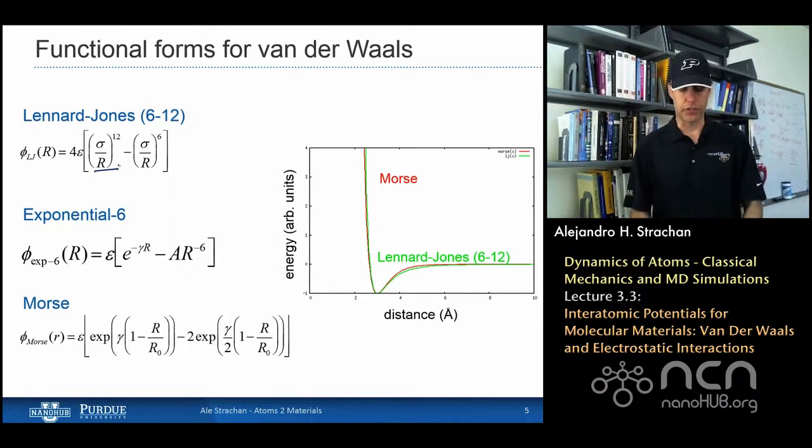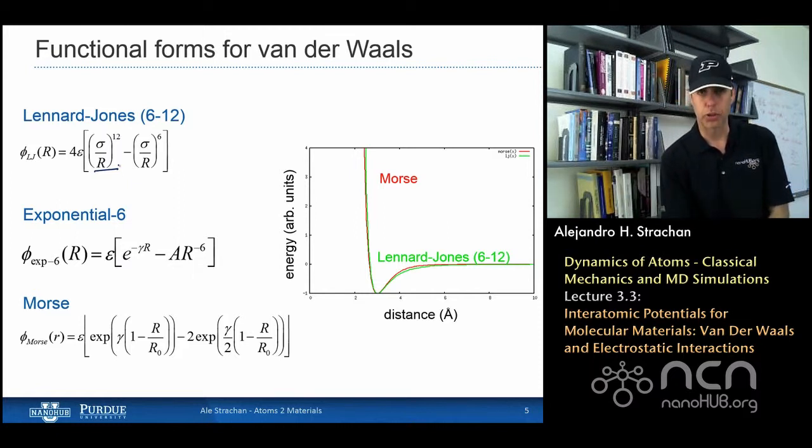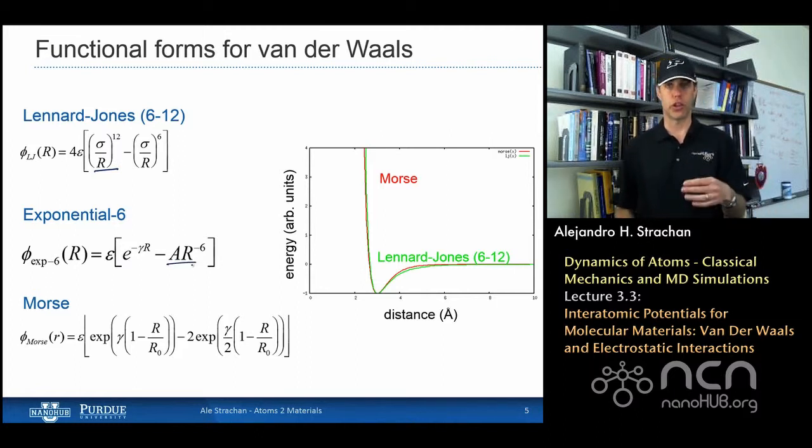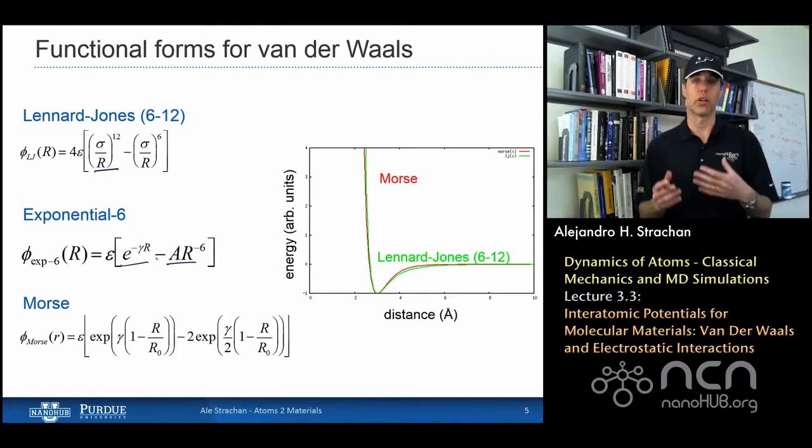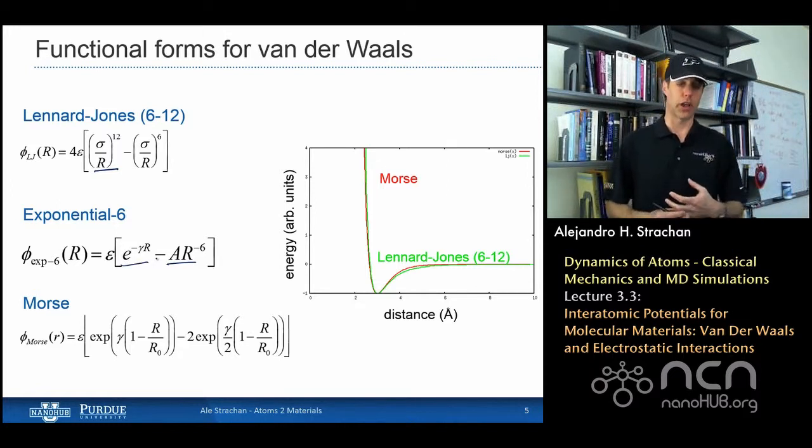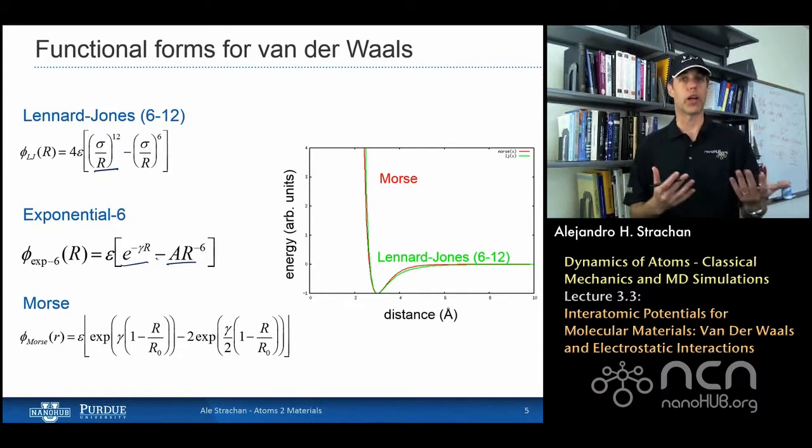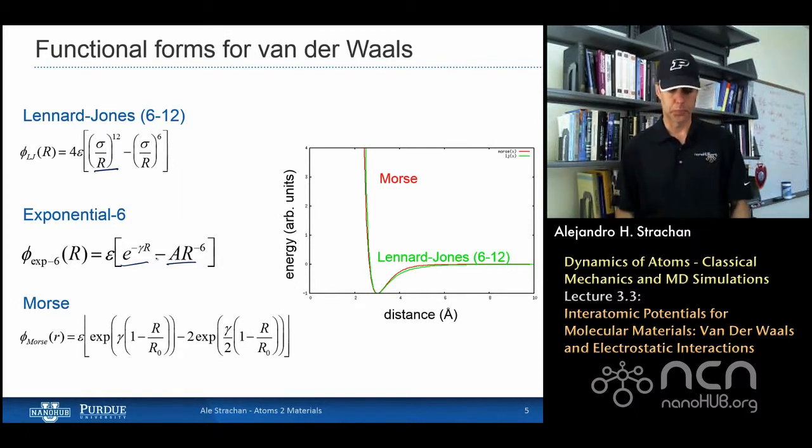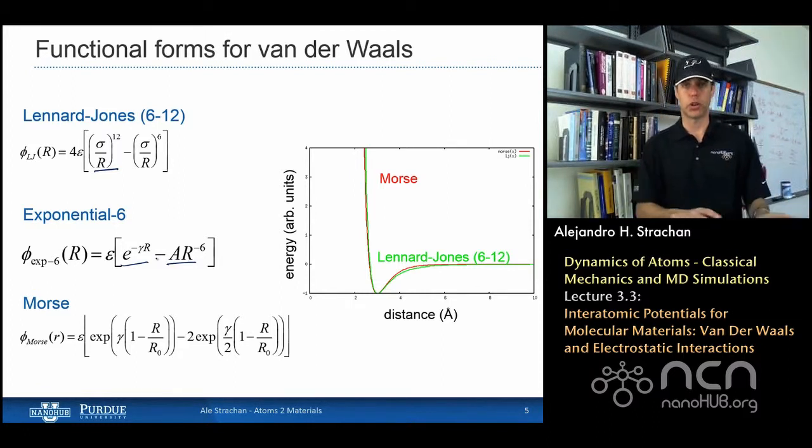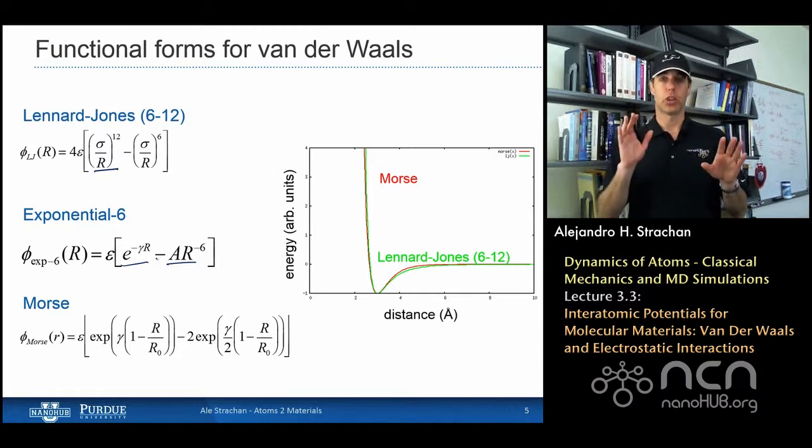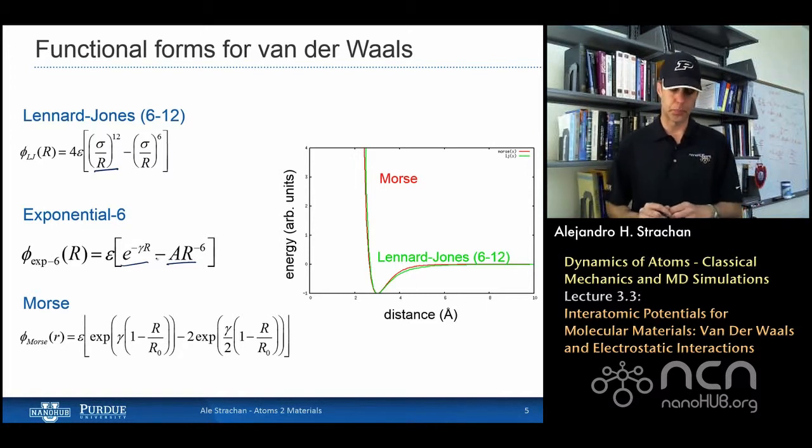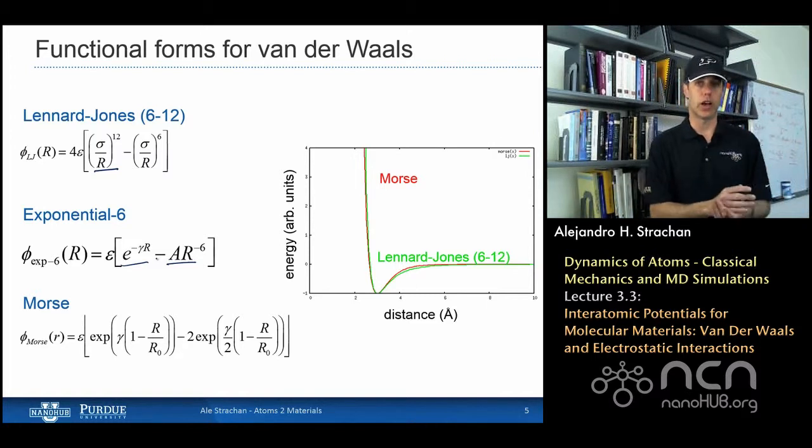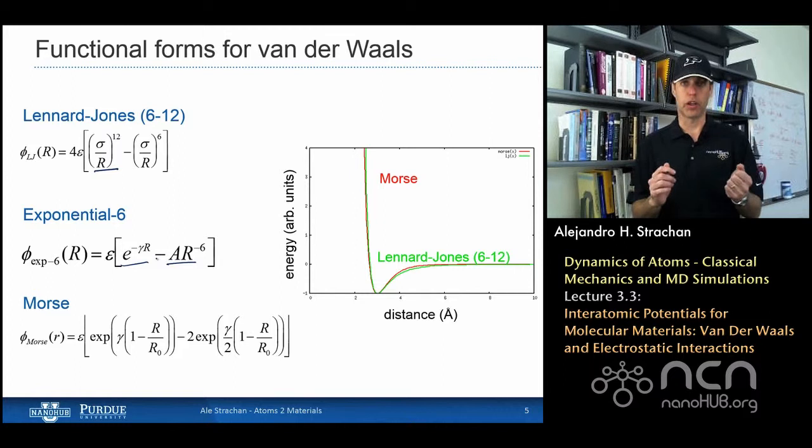A little bit better physics, you have exponential 6 where the attraction is an inverse power of 6 as the induced dipole-induced dipole, and the repulsion is exponential. This functional form has a little bit of better physics, although from a practical standpoint they are very similar. We also talked about the Morse potential where both the attraction and the repulsion are done with exponentials. Just like in chemical bonds.